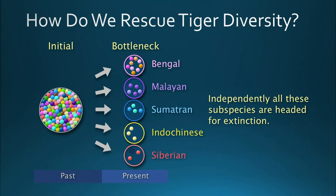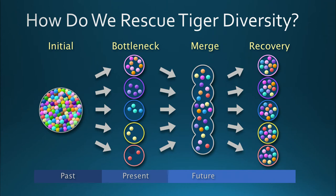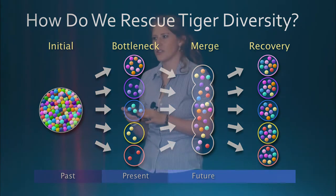So how do we rescue tiger diversity moving into the future? If we think about tiger timelines over evolutionary history, initially tigers were well admixed. They then evolved over very long periods of time into the five subspecies we know today, which are genetically and geographically distinct. Independently, all of these subspecies are headed for extinction — either way, they're in trouble. One idea is that we can merge them: similar to the Florida panther story, we can take genes from other populations to recover diversity, then recover them independently in their different geographic locations. But this raises complicated questions: how many individuals do we move, how often, and which individuals are most fit to introduce into new populations?